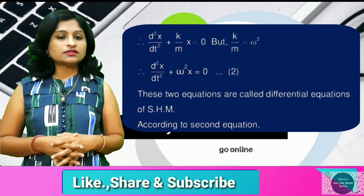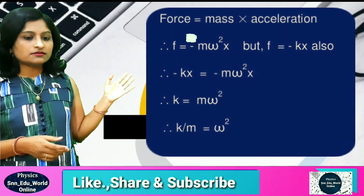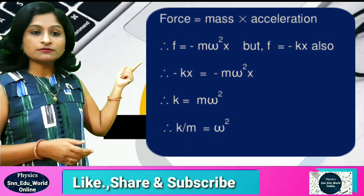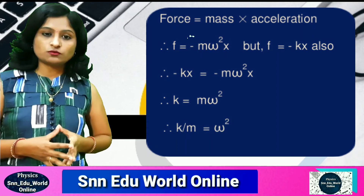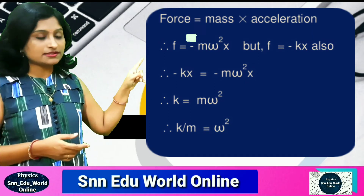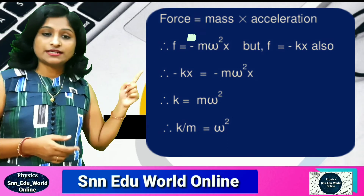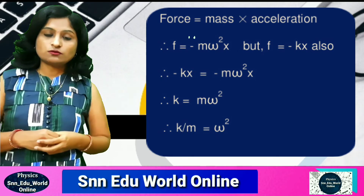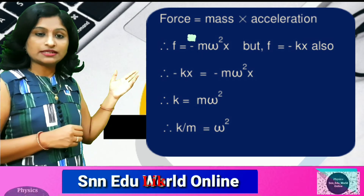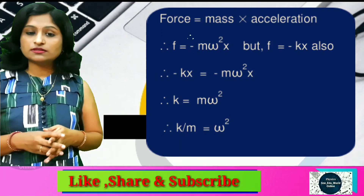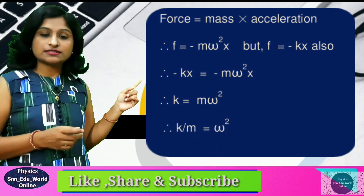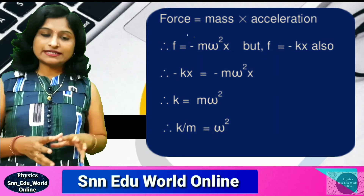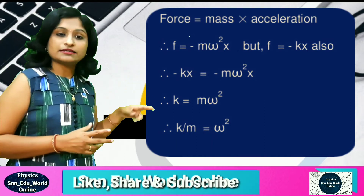To understand why k/m equals omega squared: from Newton's second law, force equals m times acceleration, and from the SHM equation, acceleration equals omega squared times x. So force equals minus m omega squared x. Comparing this with F equals minus kx, we get minus kx equals minus m omega squared x, which gives k equals m omega squared, and therefore k/m equals omega squared.